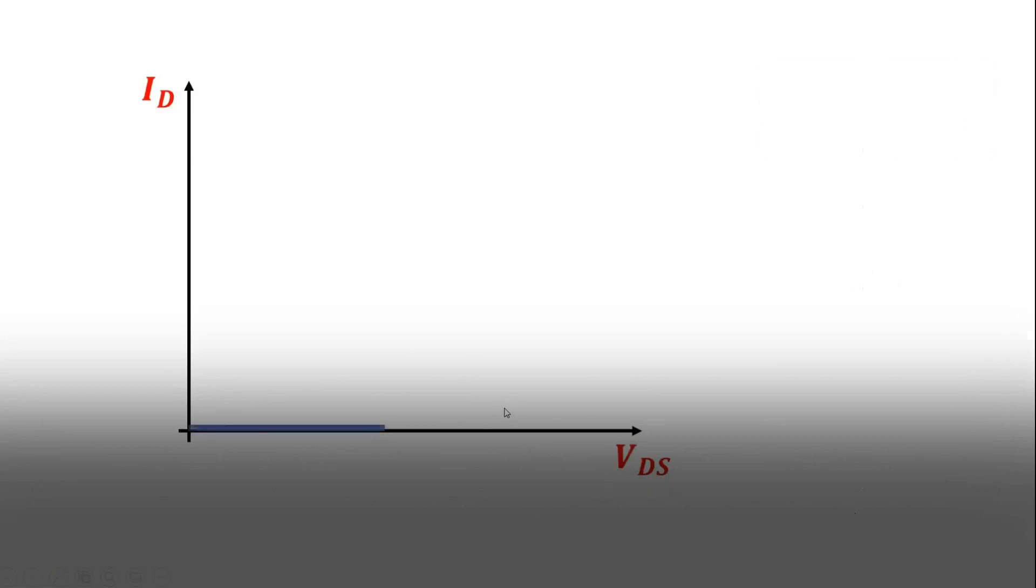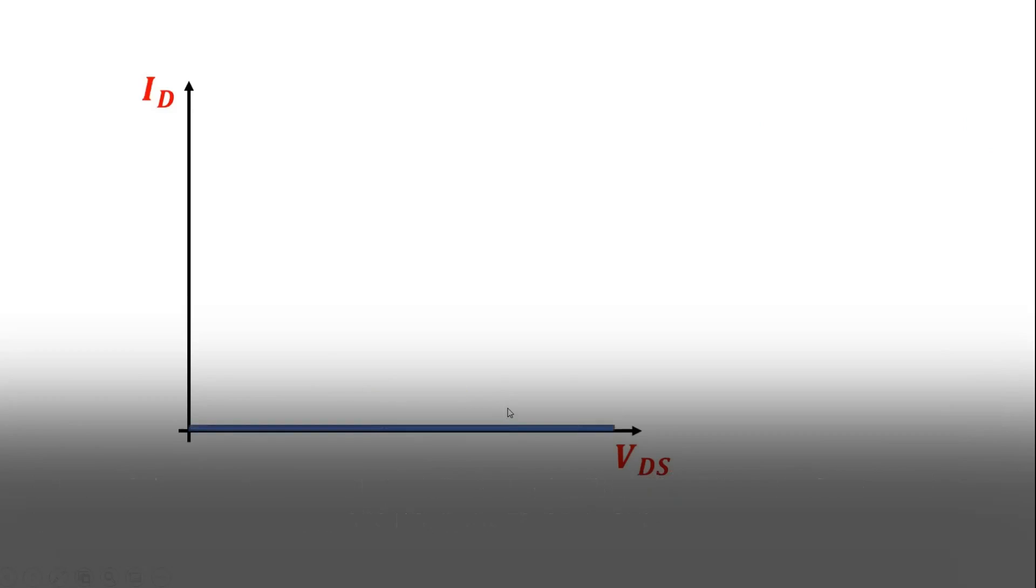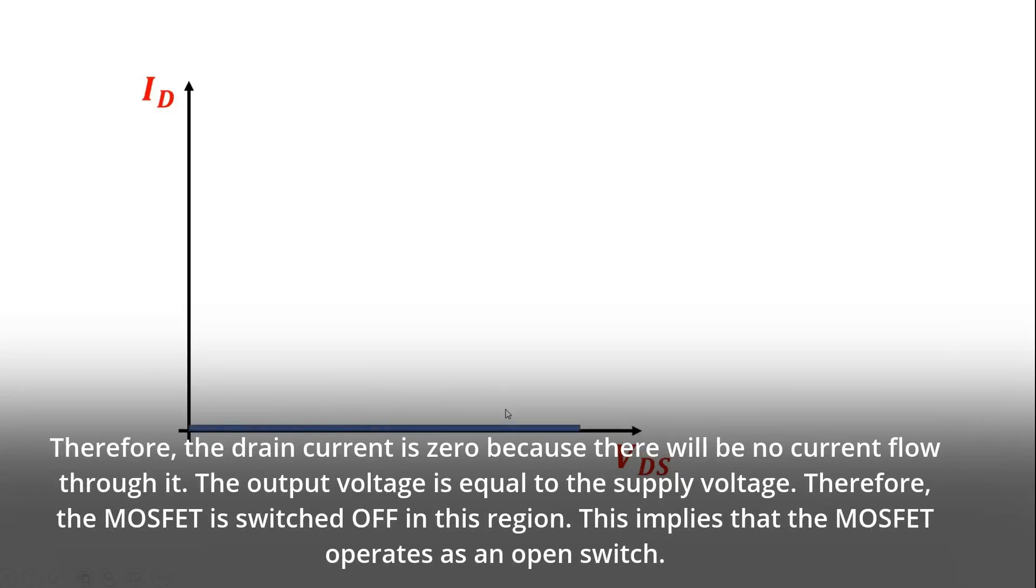The first region considered is the cutoff region. In this region, the MOSFET has no input gate voltage. Therefore, the drain current is zero because there will be no current flow through it.